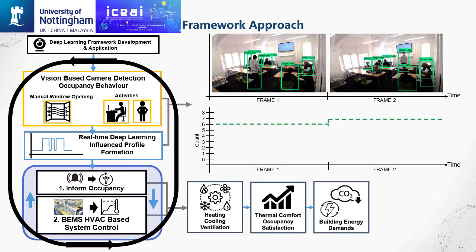The diagrams here represent the framework approach. Deep learning techniques were employed to develop a vision-based detector, enabling real-time detection and organization of occupancy within an indoor space. Detection results were recorded in the form of a generated deep learning inference profile. These results were used to provide different system responses designed to assist the HVAC control system in providing adequate indoor thermal comfort and air quality while improving building energy performance.